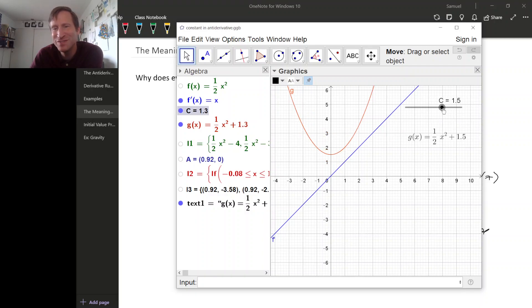Well, no. Shifting a graph up and down doesn't change the slope of any tangent line, and that means that as C changes, the derivative of this orange graph is always the same.